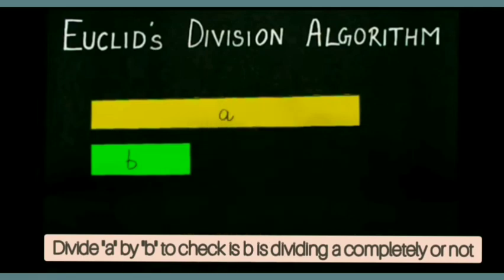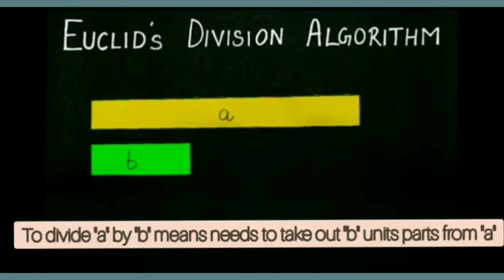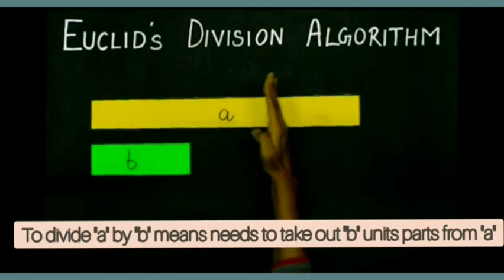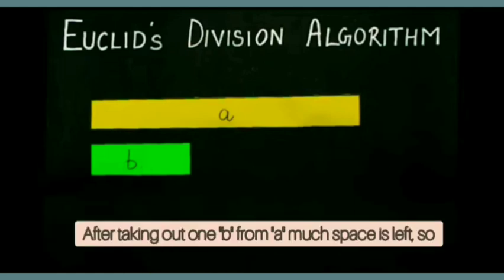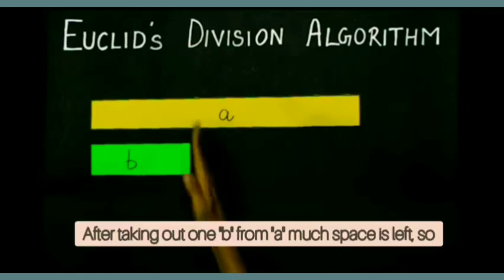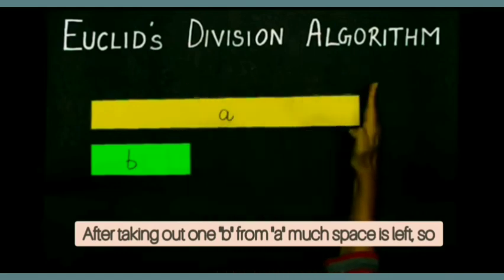Now for that, divide A by B means need to take out B units part from A. This is one part. After taking out one B from A, much space is left.